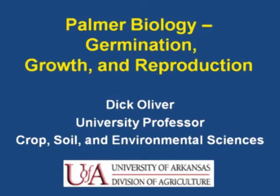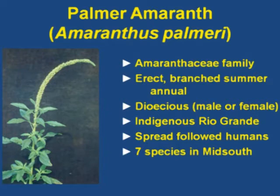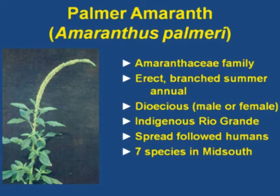In Fayetteville, Palmer Amaranth would be called Amaranthus palmeri, which was discovered by Edward Palmer in the late 1800s. It's an erect, branched summer annual, and it's dioecious — male and female plants are separate. It's indigenous to Rio Grande, South Texas, and it has followed humans across the southeast. There are presently seven other Amaranthus species here in the Mid-South.